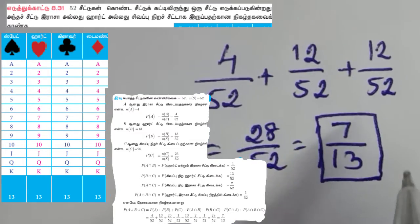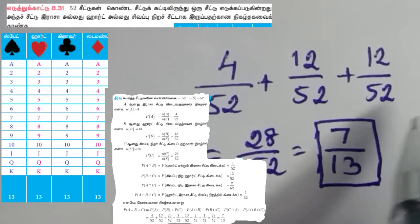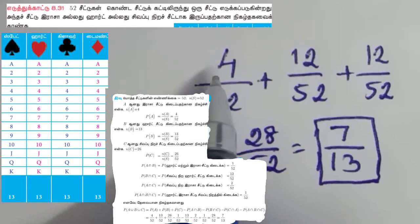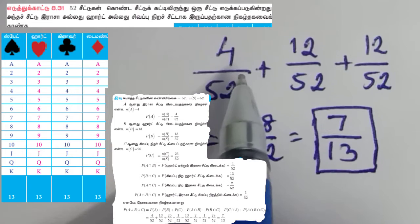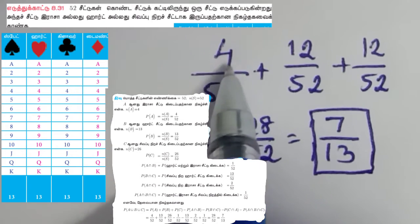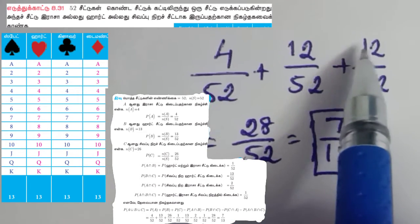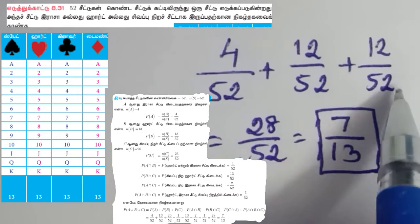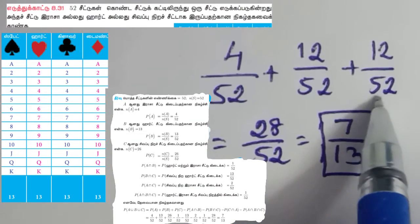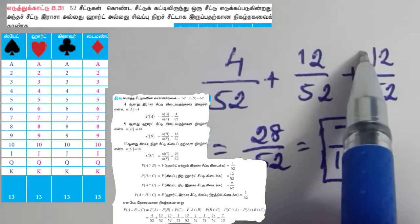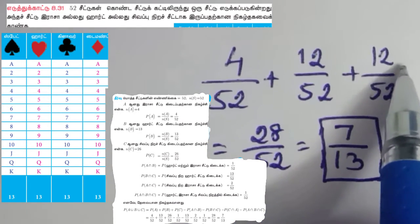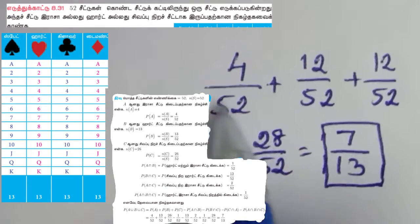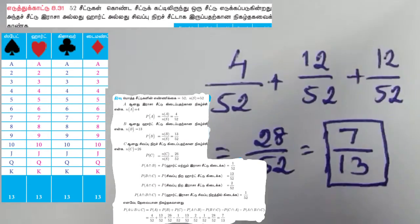Now there are 13 seats in the diamond. In these 13 seats, Raja has one seat. So Raja has one seat. What are you doing in 52 seats? So now you have to add your answer.